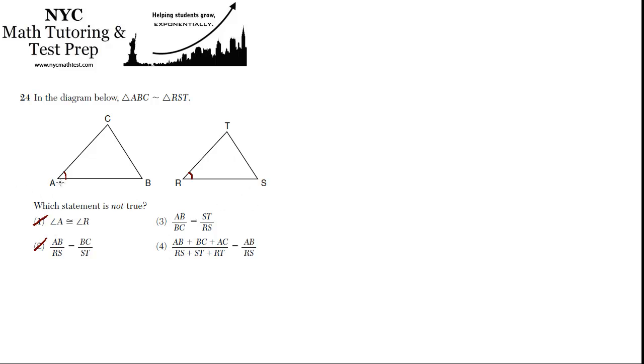AB is to BC, so the bottom is to the right side, as ST is to RS, the right side is to the bottom. See, they switched it. You can't do that. If it's bottom to right, then this has to be the same. It has to be RS to ST, not the other way around, or it won't work. So that's the one that's not going to be true.